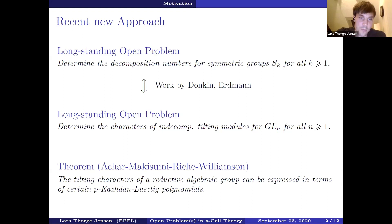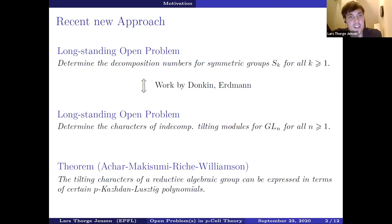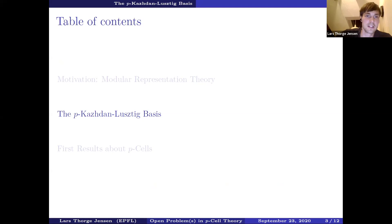Up to maybe 2016, there hasn't been a lot of progress on these two problems. But then there was a very interesting new approach and result by Achar, Pramod Achar, Shotaro Makisumi, Simon Riche, and Geordie Williamson. They proved that the tilting characters of a reductive algebraic group can be expressed in terms of certain p-Kazhdan-Lusztig polynomials. There's a small assumption on p, but I don't want to be too technical here. The p-Kazhdan-Lusztig polynomials are base change coefficients between the p-Kazhdan-Lusztig or p-canonical basis and another basis. I hope that this is at least for the people interested in modular representation theory a motivation why one should learn more about the p-canonical basis or p-Kazhdan-Lusztig basis.